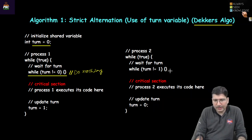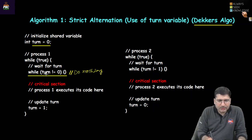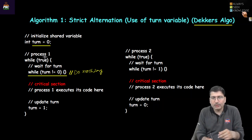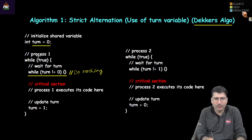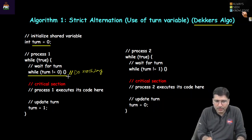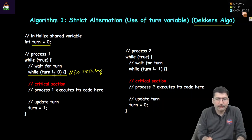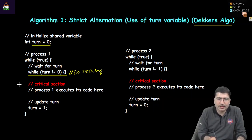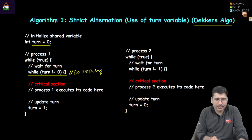A similar while loop is applied for process 2. If it is not the TURN of a process, that process will keep on waiting indefinitely until the condition becomes false. If TURN equals 0, that means it is the turn of process 1, and process 1 will start executing the critical section. So assuming only two processes, when TURN is 0 process 1 executes the critical section, and when TURN is 1 process 2 can execute it.